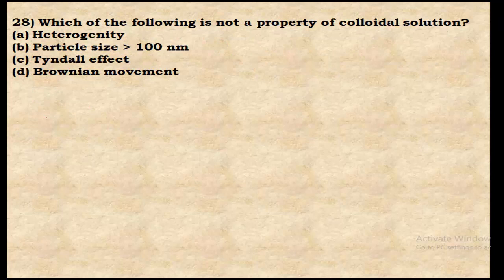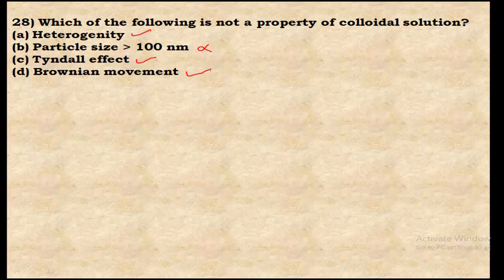Question 28: Which of the following is NOT a property of colloidal solution? Colloidal solutions are heterogeneous mixtures — correct. Particle size greater than 100 nm — this is wrong; colloidal particle size is 1 to 100 nm; above 100 nm is a suspension. Colloids show the Tyndall effect and Brownian movement. The incorrect property is option B: particle size greater than 100 nm.